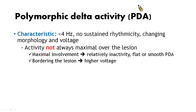One of the examples is polymorphic delta activity, abbreviated as PDA. It is characterized by frequency less than 4 Hz without sustained rhythmicity. The morphology and voltage are always changing.